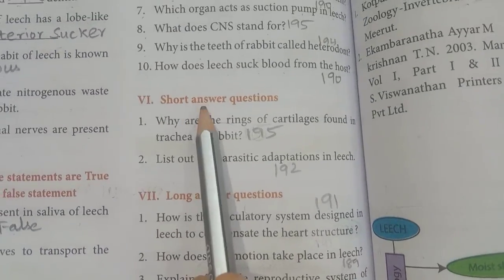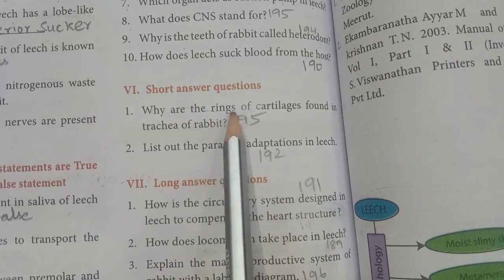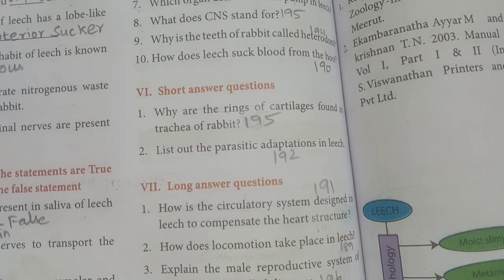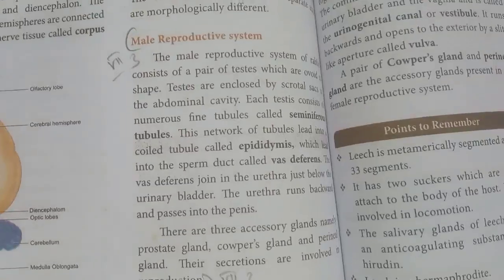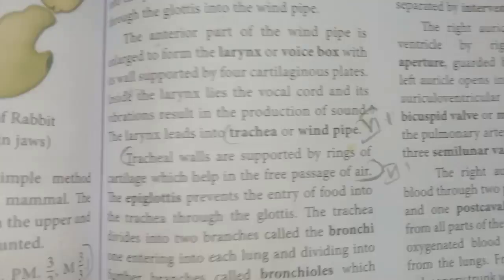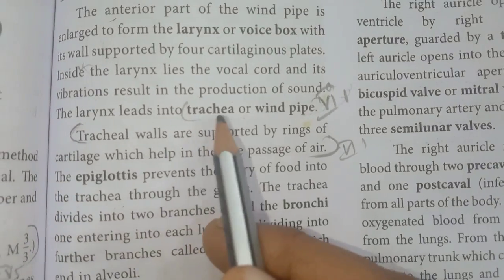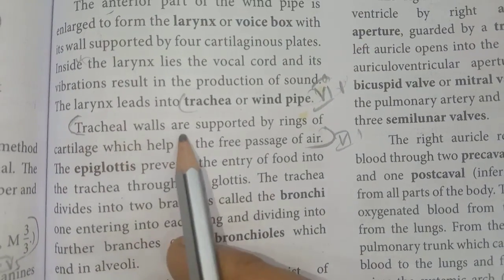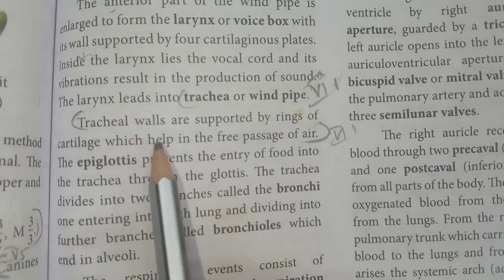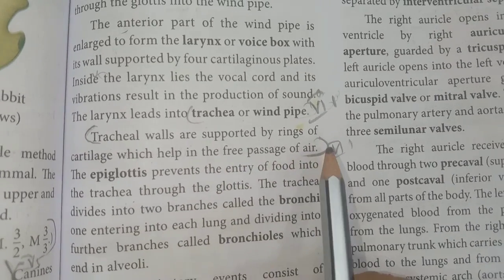Roman number 6: short answer questions. Question 1: Why are the rings of cartilage found in the trachea of rabbit? Refer to page 195. The tracheal walls are supported by rings of cartilage, which helps in the free passage of air.